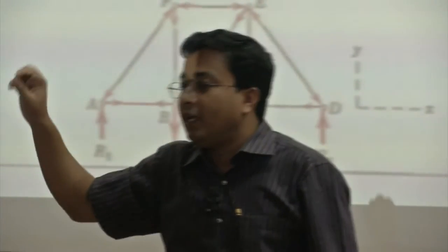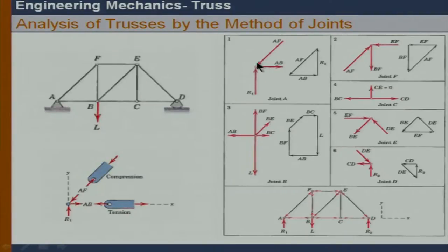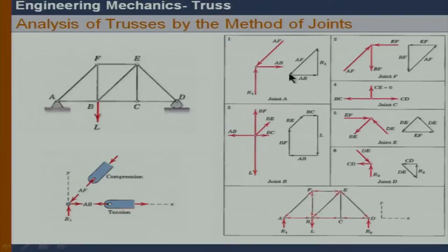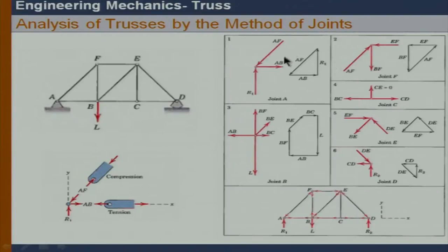We can also apply equilibrium conditions using a force triangle, since we always have a concurrent system of forces at each joint. If the system is under equilibrium, the resultant force must equal zero — we can create a closed force triangle. For joint A, if the reaction is known, we put the reaction and construct the force triangle such that the two member forces can be found. The closed circuit tells us the resultant force equals zero.